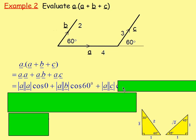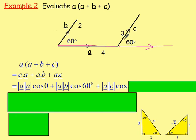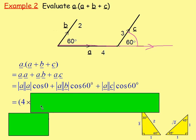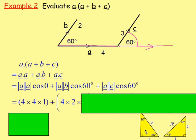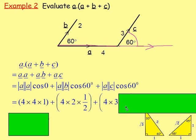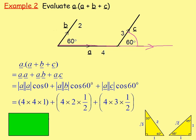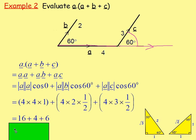A dot C is magnitude of A times magnitude of C times cos theta. One vector points into the vertex and one comes out, so slide vector A to make them both point away — the angle between them is also 60 degrees. Substituting: 4×4×1 plus 4×2×(cos 60 = ½) plus 4×3×(cos 60 = ½). Simplifying: 16 + 4 + 6 = 26.